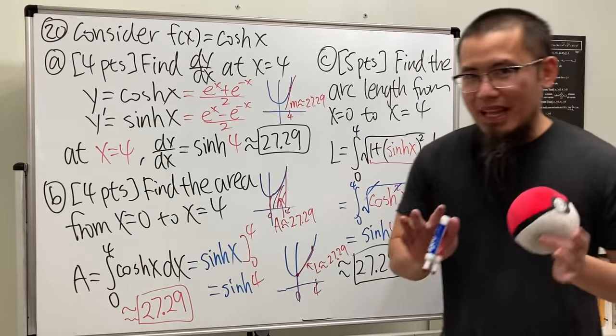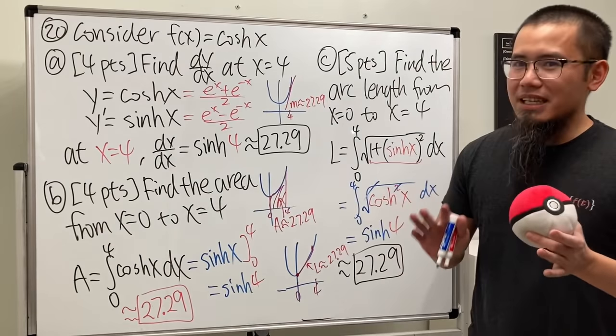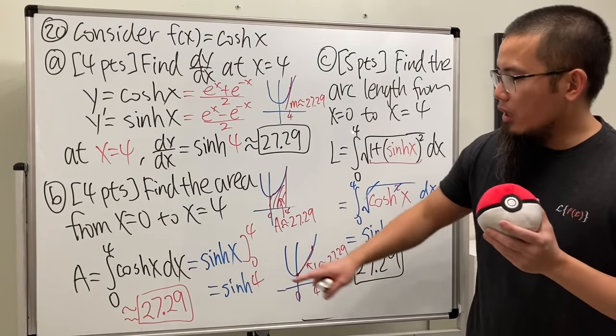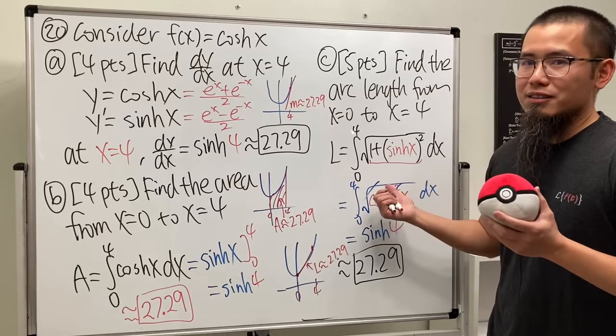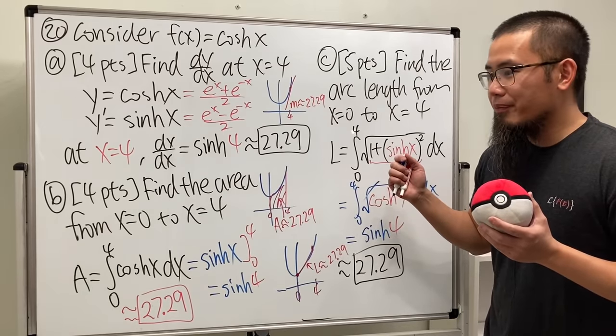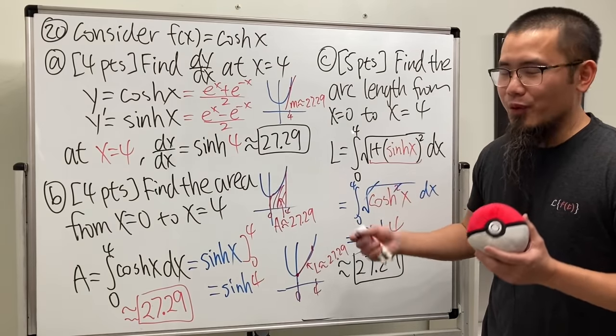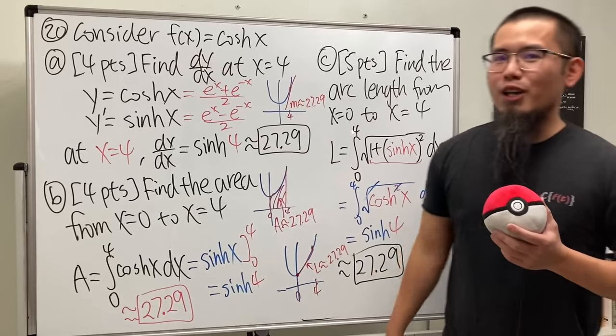In fact, this is not the first time I did this to my students. Previously, I only asked them the area and also the arc length, but for this semester I also included the slope of the tangent line.